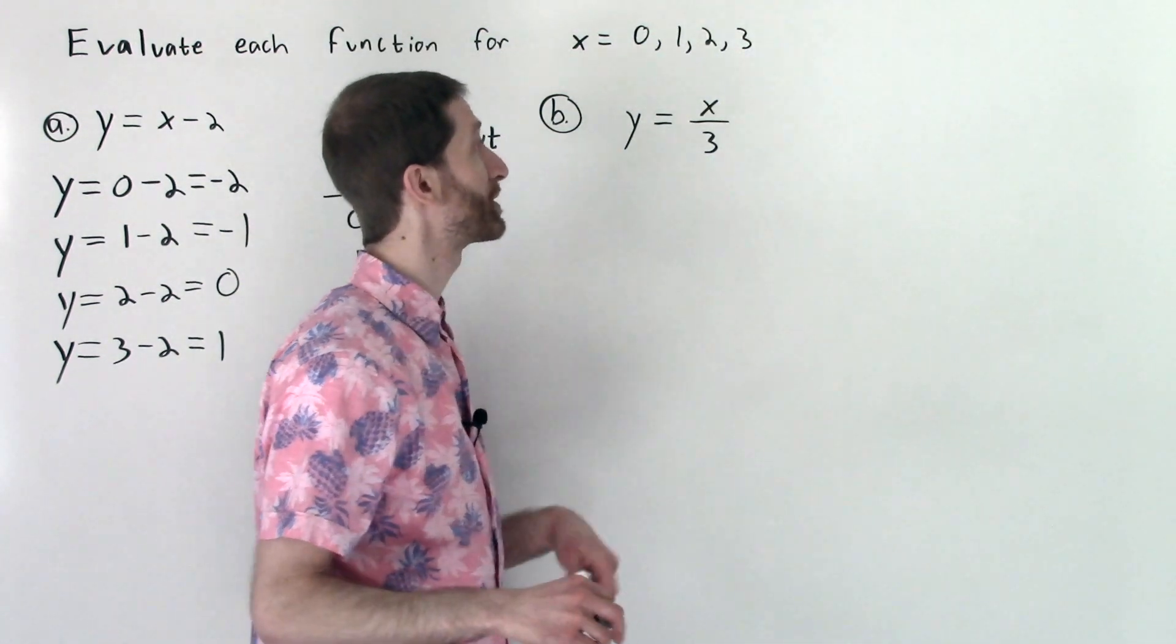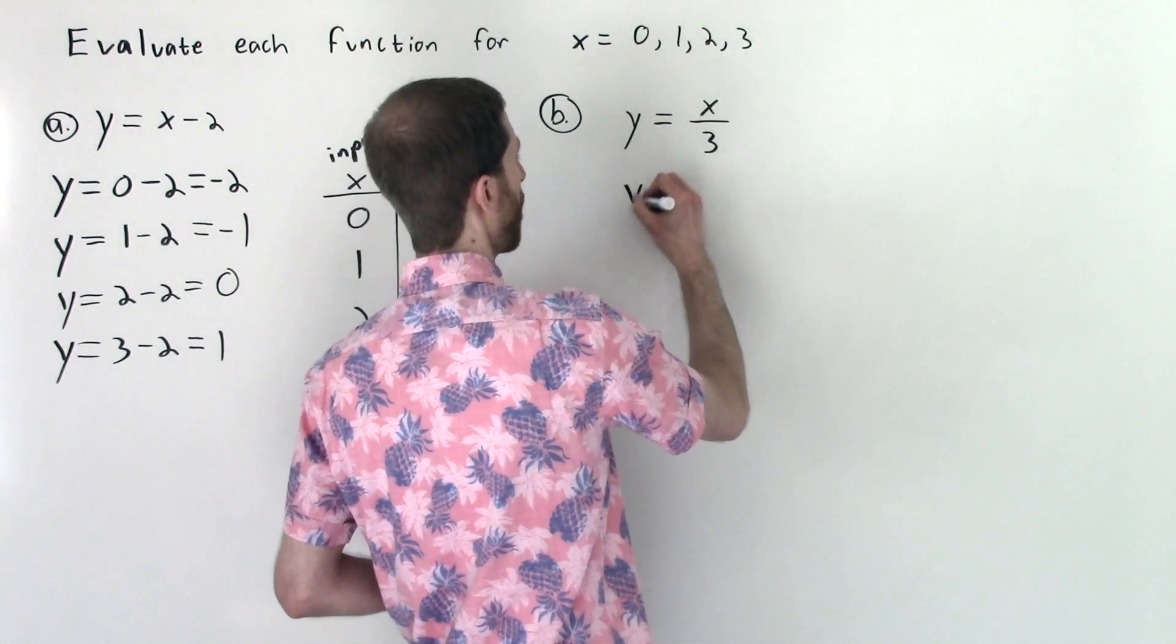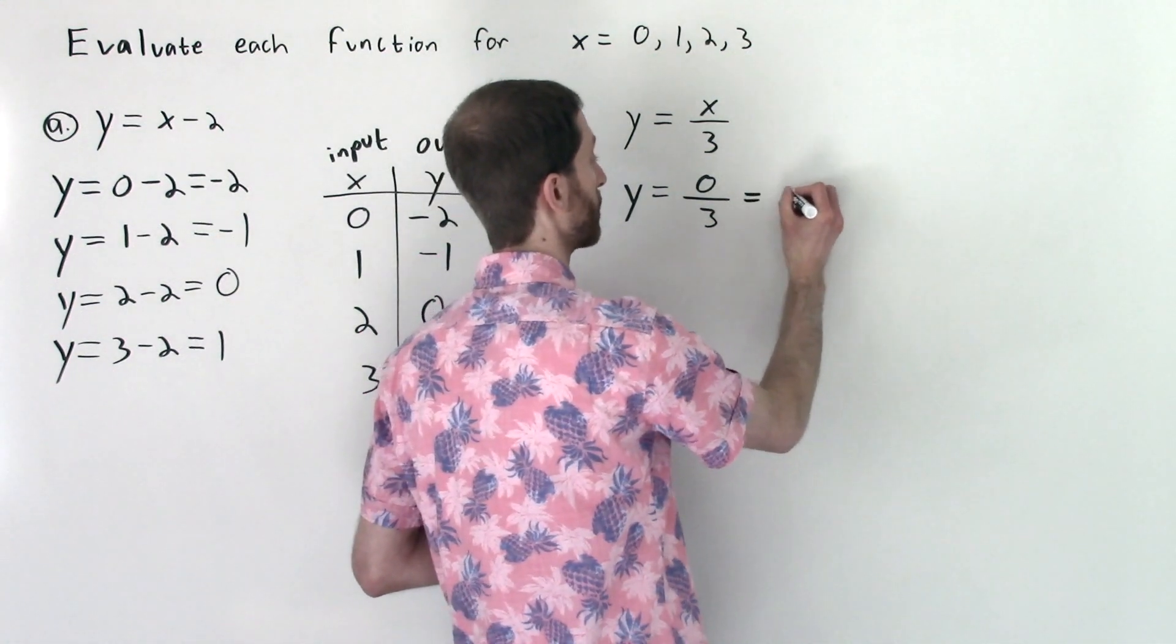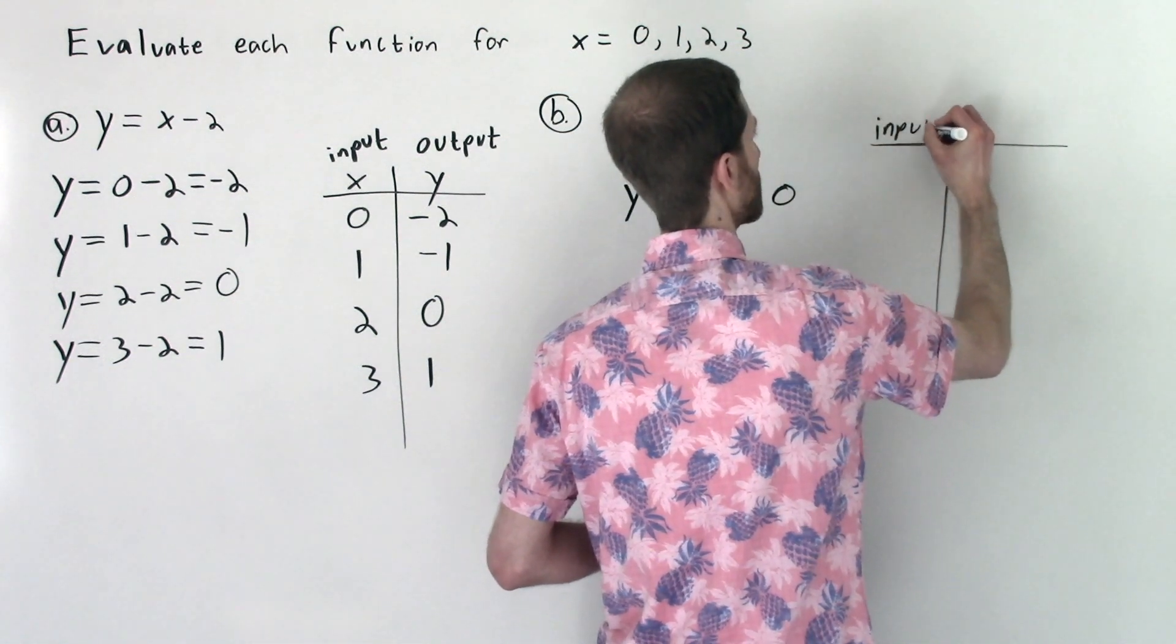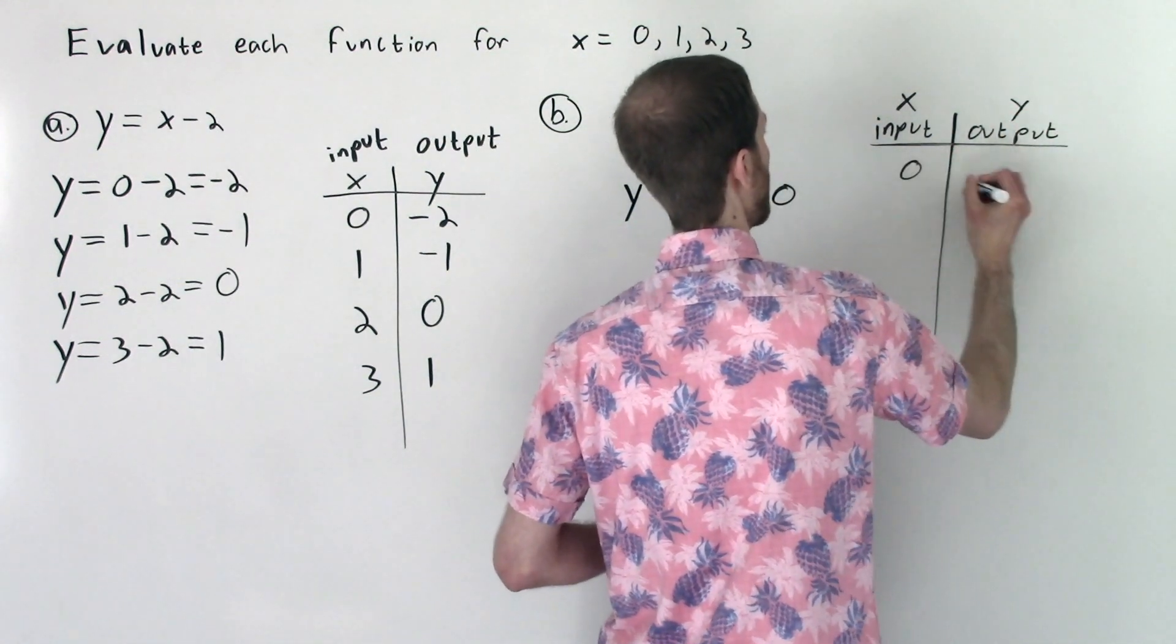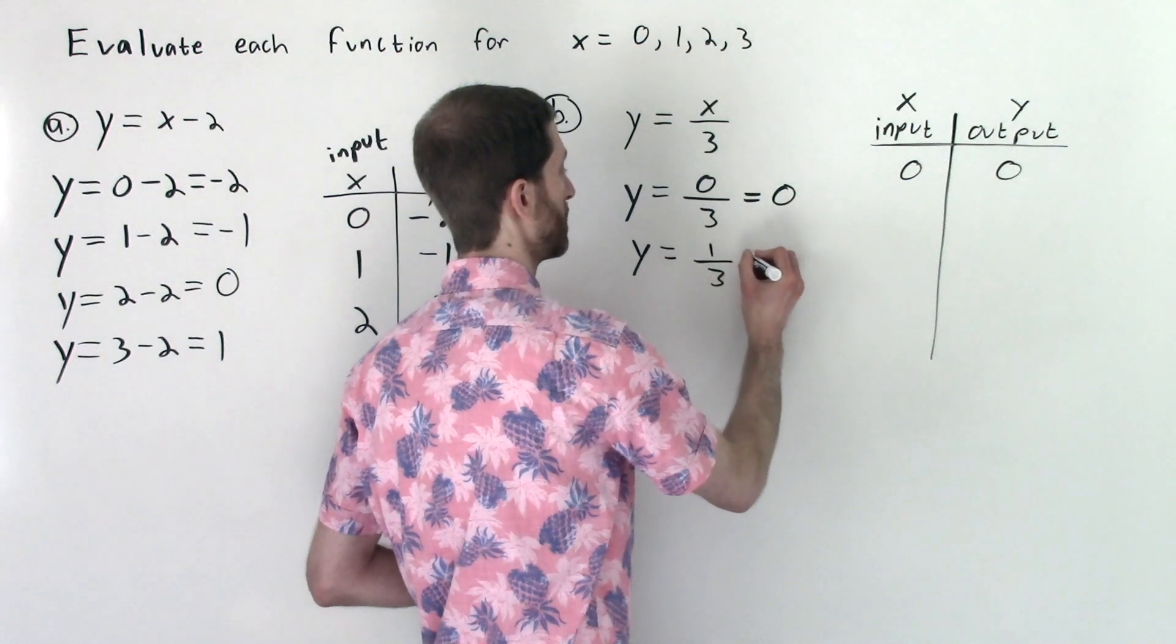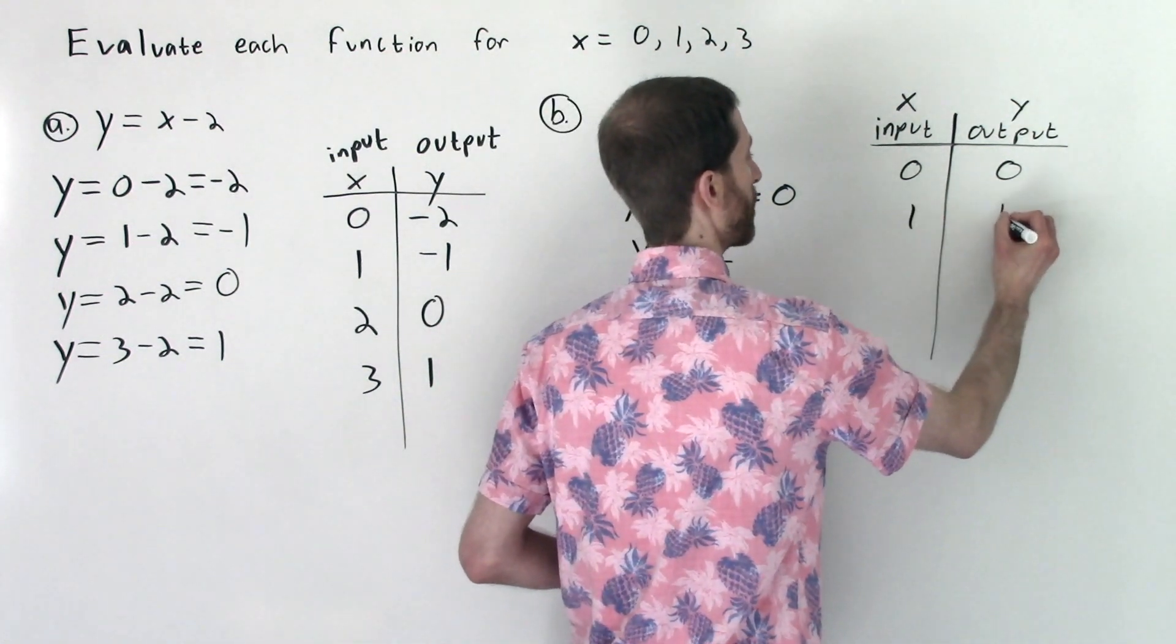All right, we're going to do the same thing here, y equals x over 3, this time involving a little division. So y is my output, my input is 0. 0 over 3, that's the same as doing 0 divided by 3, that is equal to 0. So again, let's have our table going down here. So I'm just going to write input, that's my x value, my y value is output. So my input was 0, my output was 0. All right, now my input is going to be a 1. So y equals 1 divided by 3, which I don't really have any math to do. It's just 1 third. So I input 1, I got out 1 third.